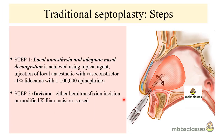Now let's see the steps of traditional septoplasty. The first and most important step is preparation of the nose through adequate decongestion and local anesthesia. Local anesthesia with a vasoconstrictive agent — usually 1% lidocaine with 1:100,000 epinephrine — is injected into the mucosa in the submucoperichondrial area. We then wait 10 to 15 minutes for full effect. After adequate decongestion, the next step is to expose the caudal margin by retracting the columella to the opposite side using a small nasal speculum or columellar retractor.